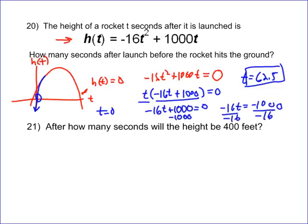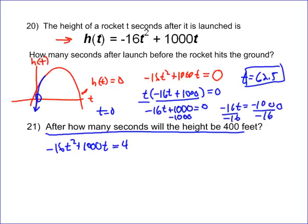So you want to find out when the height equals zero, and you do it by setting it equal to zero and then factoring — or if you can't factor, then using the quadratic formula. The second part says after how many seconds will the height be 400. Same approach, but this time our height is 400, so we're setting it equal to 400. I'm going to go ahead and use the quadratic formula.